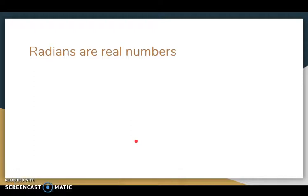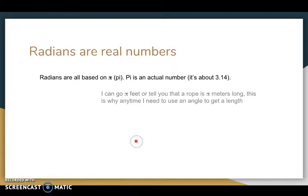Radians on the other hand are real numbers. For example, they're all based on pi and pi is a real number. Pi is that 3.14, but really it goes on forever and ever and ever. And if I told you to go pi feet, then you could walk about 3.14 feet, or you could find me a rope that is pi meters long.